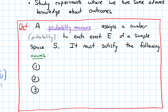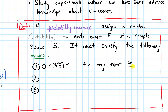This definition says that a probability measure assigns a number — referred to as a probability — to each event E of a sample space. The probability measure must satisfy the following axioms. These are three basic rules that probabilities need to satisfy.